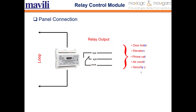For the relay control modules, as shown in this diagram, the module should be connected to the addressable system loop line. You can control door holders, elevators, phone callers, air conditioning panels, and security panels through this connection.